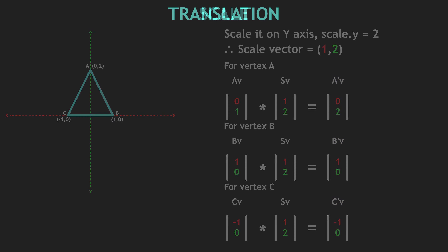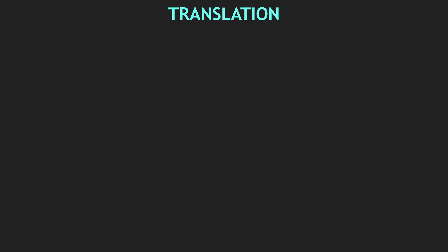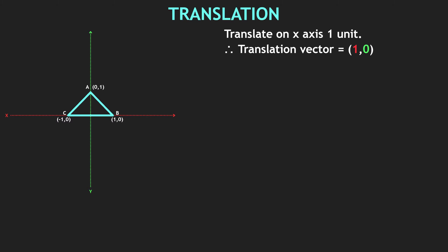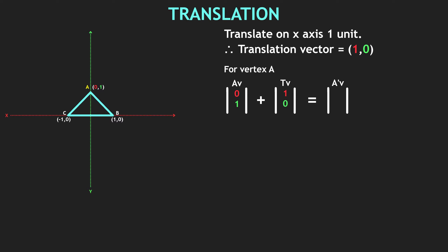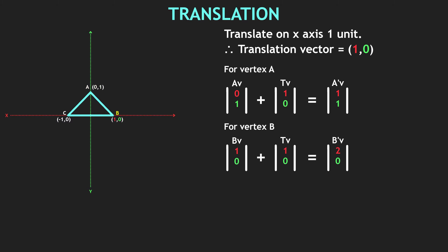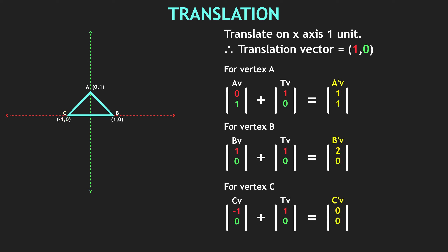Now let's move to translation. In translation, we basically add the vector to the current position to move our geometry. Let's take our triangle and this time we want to translate it 1 unit to the right. So our translation vector will be (1, 0). For vertex A, we take our A vector and add our translation vector to it: 0 + 1 = 1 and 1 + 0 = 1. We got our new vertex A. We do the same for vertex B and vertex C, and with our new A, B, and C we get our translated triangle.